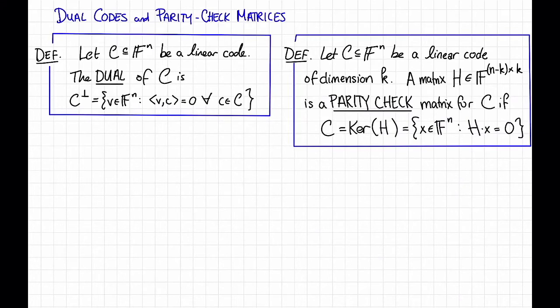Next, let's define a dual code and a parity check matrix. First, a dual code. So suppose that C, subset of f to the n, is a linear code.